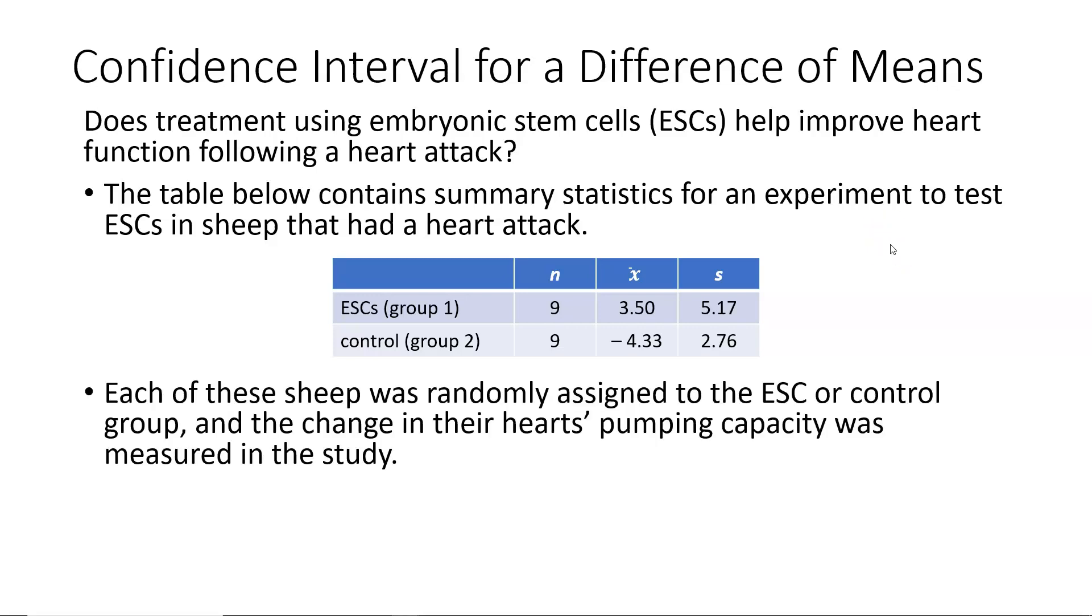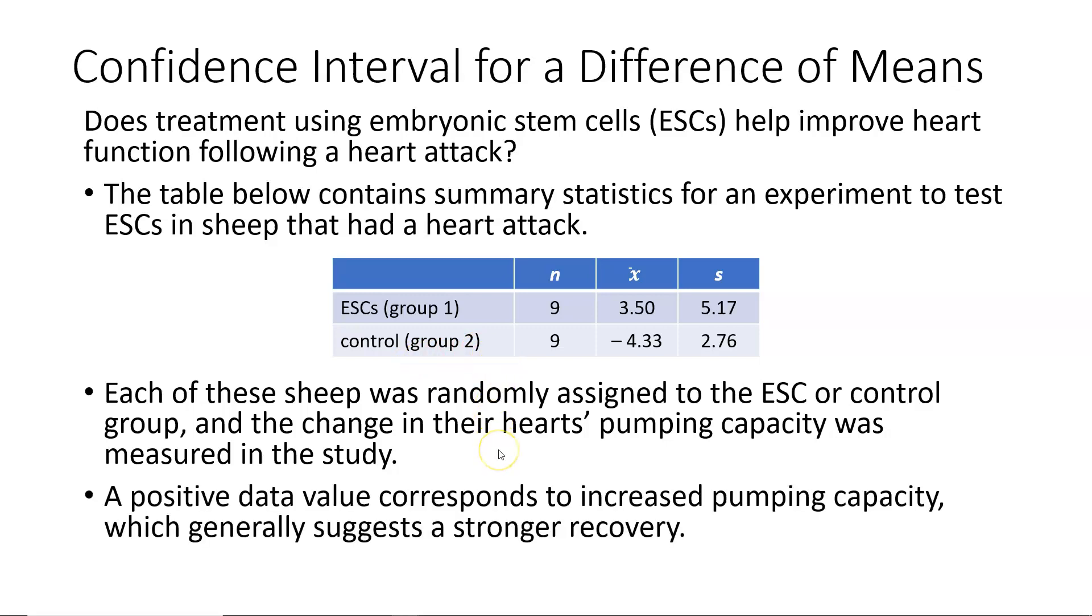Each of these sheep was randomly assigned to the ESC or control group, and the change in their heart's pumping capacity was measured in the study. Please note that the ESCs group is designated as group one, so I will use subscripts of one throughout the problem. The control group is designated as group two, and I will use subscripts of twos for that particular group throughout. A positive data value corresponds to increased pumping capacity, which generally suggests a stronger recovery.